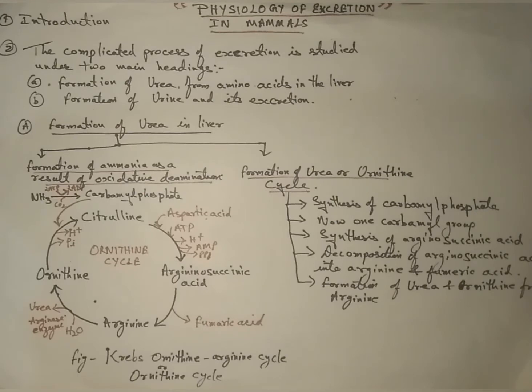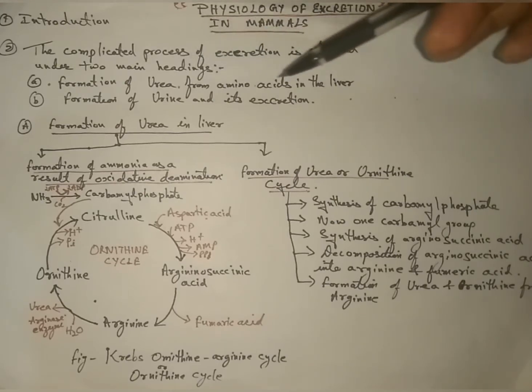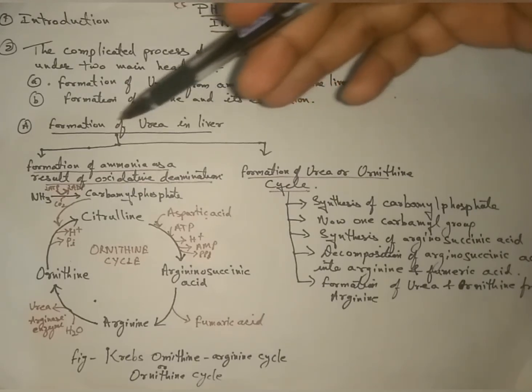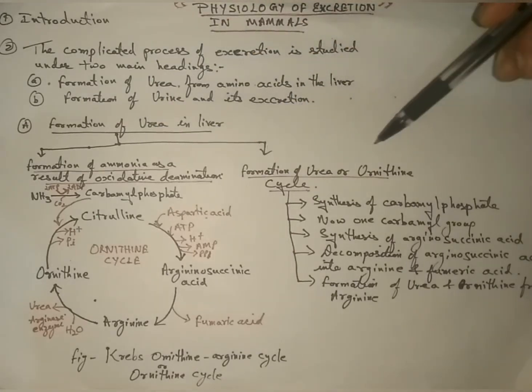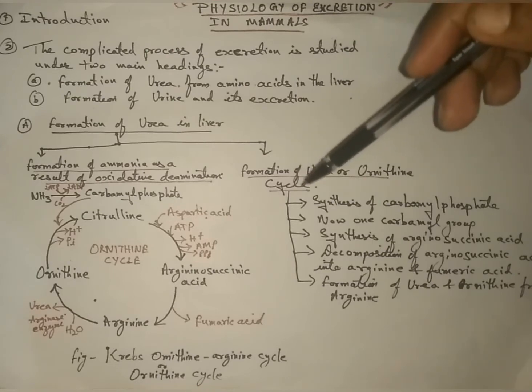Today we will discuss the physiology of excretion in mammals. In this we will discuss the formation of urea in liver, in two parts: formation of ammonia as a result of oxidative deamination, and formation of urea or ornithine cycle.